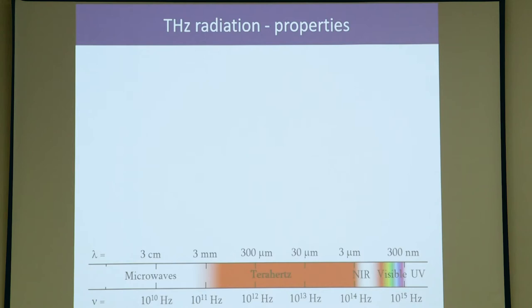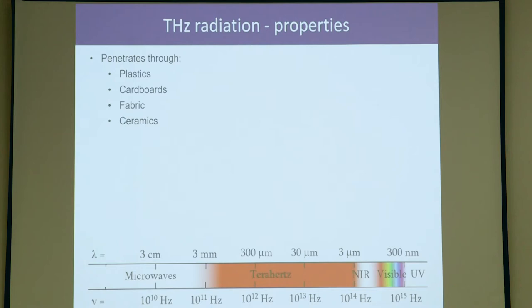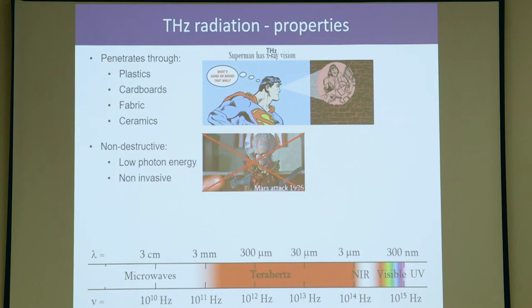There's a lot of incentive to develop better sources and detectors in this region because once you have it, there's a lot of nice advantages. It can be used to go through plastics, cardboards, fabrics, ceramics, optical media which are usually opaque to the visible. Some people would say Superman has x-ray vision, but science is still undecided on that. It could also be terahertz vision. You also have low photon energy, so it is a non-invasive technique, good for medical imaging.